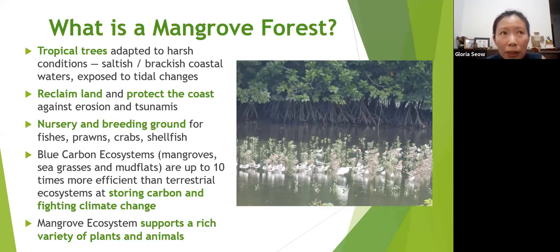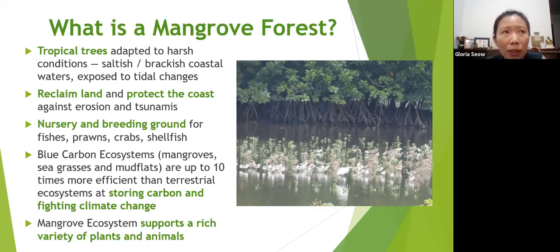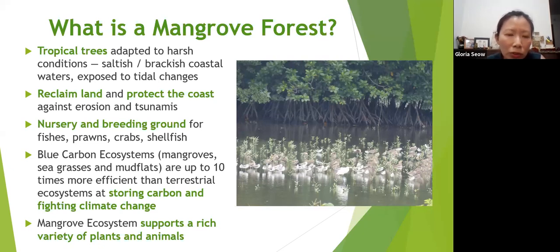In the 2004 tsunami that devastated many areas and caused a lot of damage, entire villages were swept away when the big wave came in and many people died. But those villages located behind mangroves actually suffered a lot less damage.